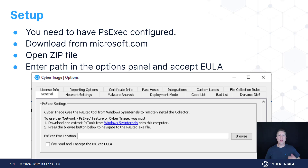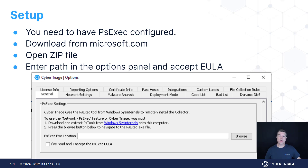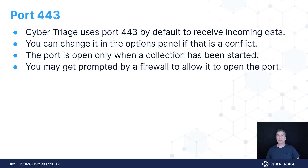In terms of setting up, it's pretty straightforward. You need to have PSExec on the system — that's just a straightforward download from Microsoft. You then go into your CyberTriage options panel and configure it within the settings. If it hasn't been configured, the first time you go to run it, you'll actually be prompted to go in and configure it, and we'll see that in the demonstration. CyberTriage uses port 443 by default to receive the incoming stream from the endpoint. You can change it in options if needed, but note that the firewall must be open on that port. Significantly, CyberTriage is only going to be listening on that port when there is actually a collection that has been started.